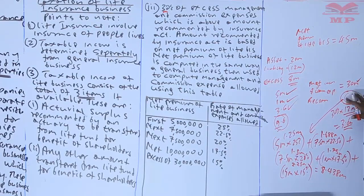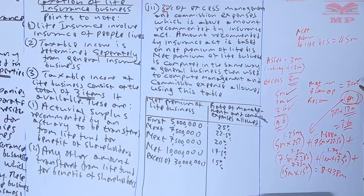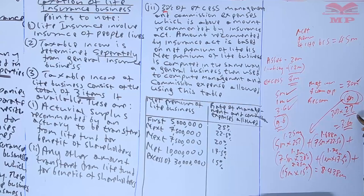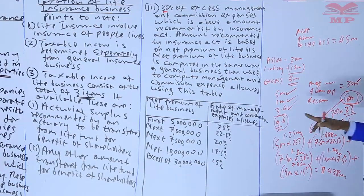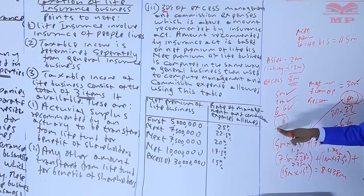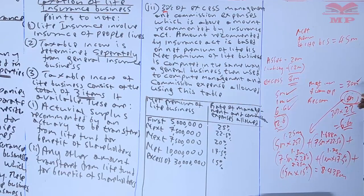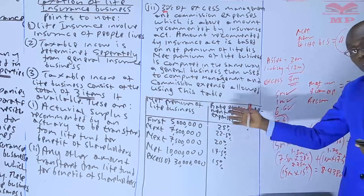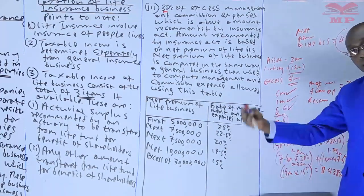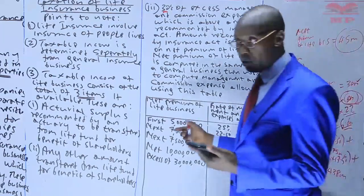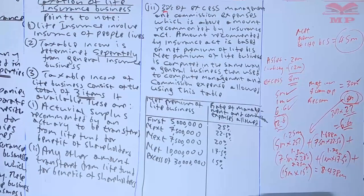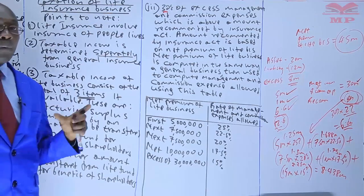Based on the net premium of 45 million, the recommended amount is 8.438 million — rounding to 8 million. The management and commission expense incurred is 30 million, so the excess is 22 million. Taking 30 percent of 22 million gives 6.6 million. That becomes the taxable item, giving a total taxable income of 12.6 million. That is how you tax life insurance business. We will now look at a question to apply this.